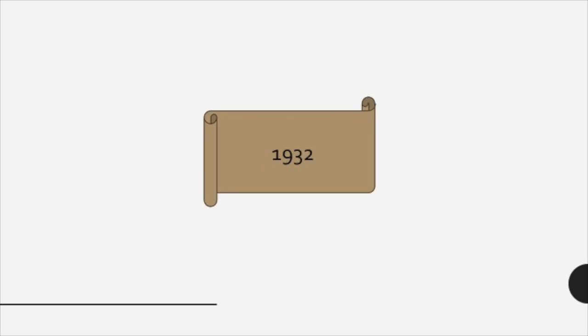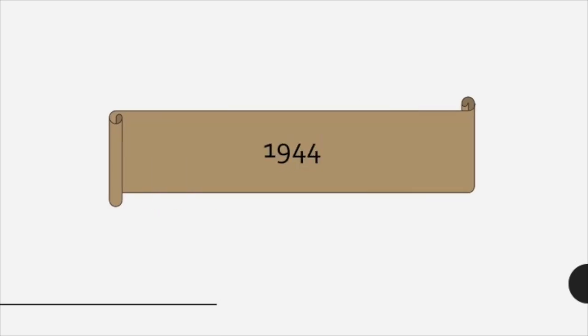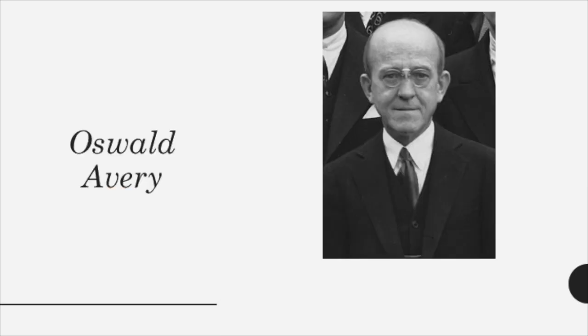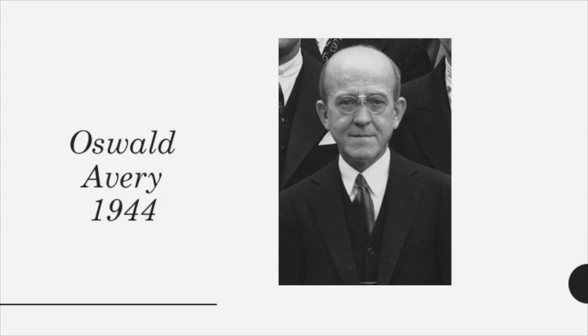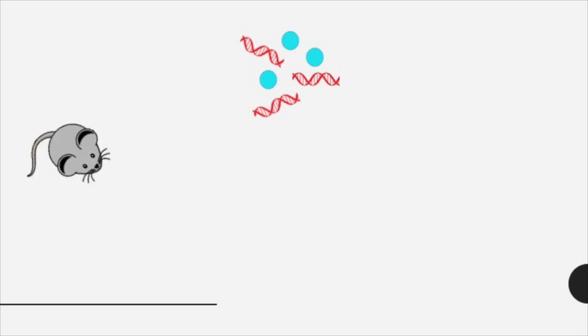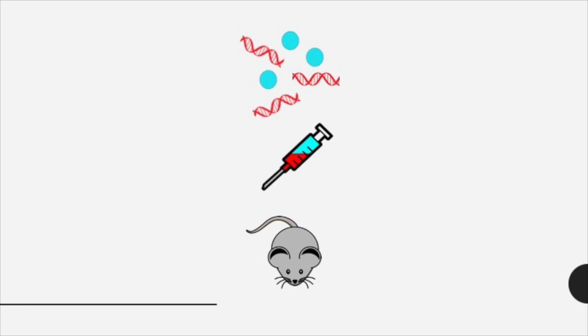Almost two decades later Oswald Avery and his colleagues drew from Griffith's observations and continued his experiment. Avery extracted the DNA from the heat killed virulent pneumococci and removed as much RNA and protein as possible to isolate the DNA. He added this DNA to non-virulent bacteria and they were again transformed into a lethal virulent strain and the mouse died.